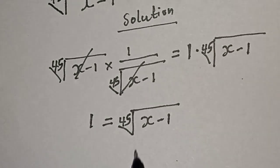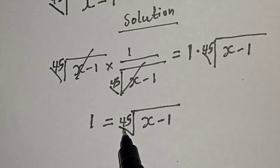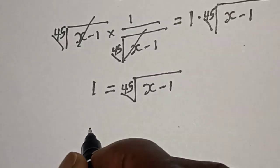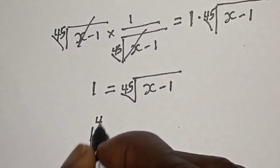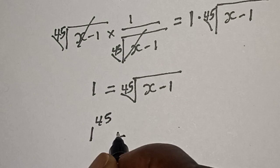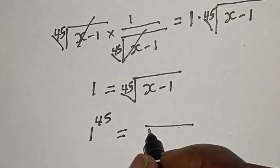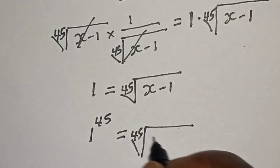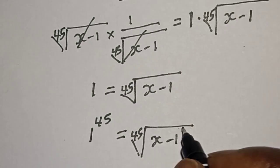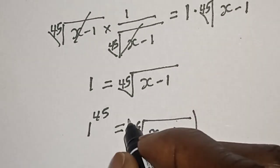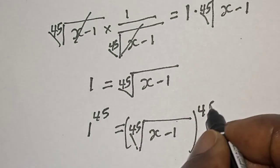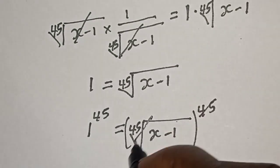Let's take the power of both sides by 45. That is, 1 raised to the power of 45 is equal to 45 root of x minus 1 raised to the power of 45. This one will cancel this.